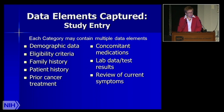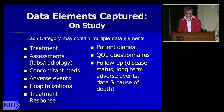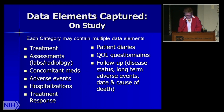At study entry, some data elements that could be captured are demographic data, eligibility criteria, family history, and patient history. All of these are collected at the time of study entry, and each may have multiple data elements within them. On study, each category can also contain multiple data elements and may consider capturing the treatment, assessments of labs, radiology, things done in the interim during treatment, concomitant medications, adverse events, hospitalizations, and treatment response. There are also patient-reported outcomes forms that may be completed, such as diaries and quality-of-life questionnaires. These are all things to consider when developing your case report forms.